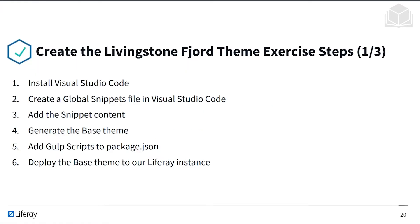Here are the steps we'll be taking. First, we'll install Visual Studio Code, then we'll create a global snippets file in Visual Studio Code and add the snippet content within that. We'll also generate the base theme and add the gulp scripts to package.json. Then we'll deploy the base theme to our Liferay instance.